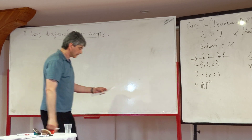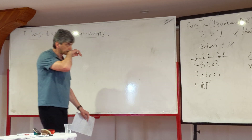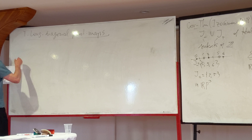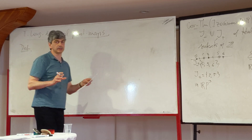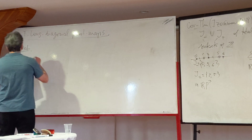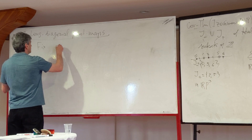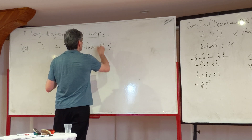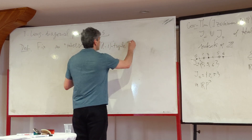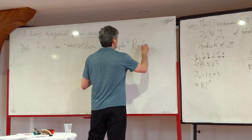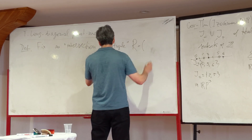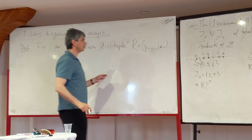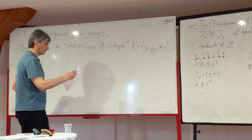To define pentagram maps, I will introduce yet one more notion related to the choice of yet one more d-1 tuple. I would like to use what's called an intersection d-1 tuple. Let me call this r. It will consist of the points j1 and so on, jd minus 1.